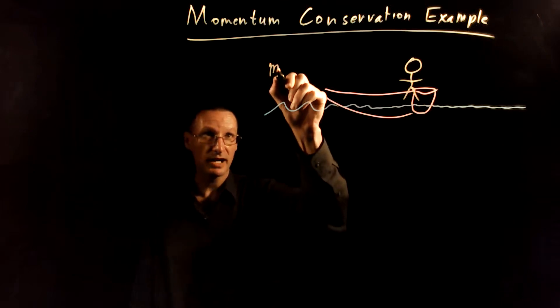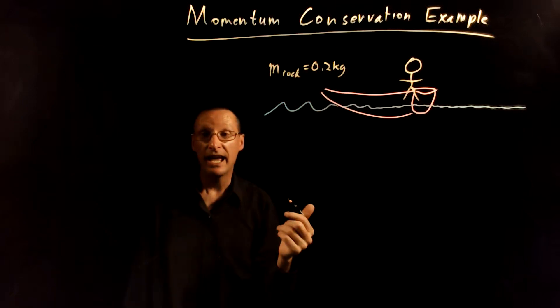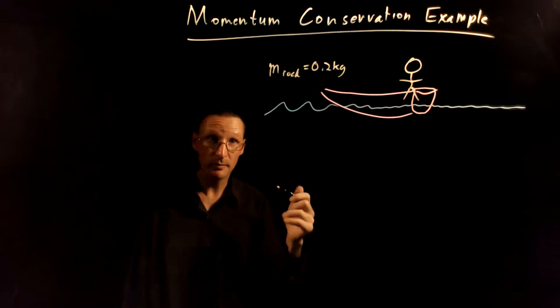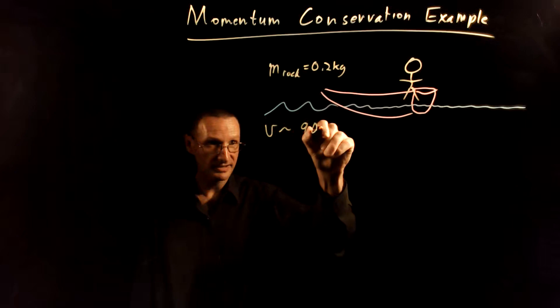The mass of the rock is about 0.2 kilograms, and let's say you have a very strong arm and you can throw the ball about 90 miles an hour if it's a baseball.